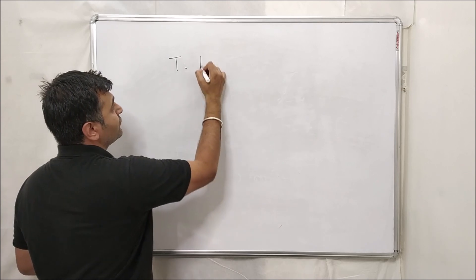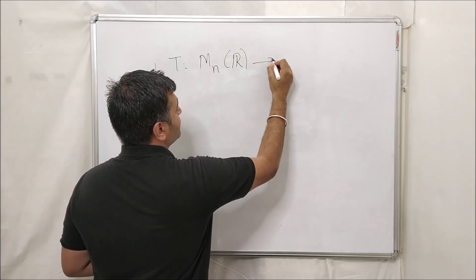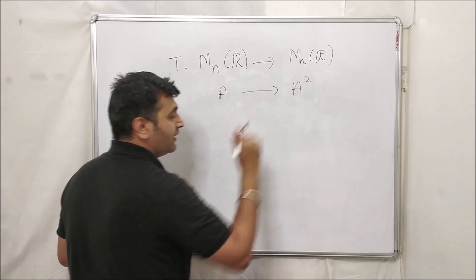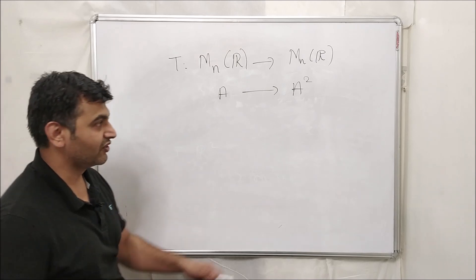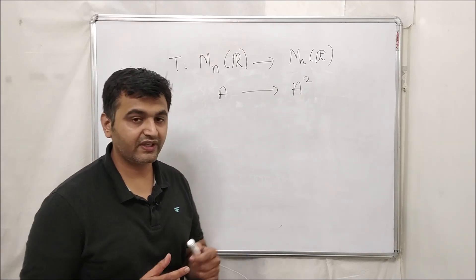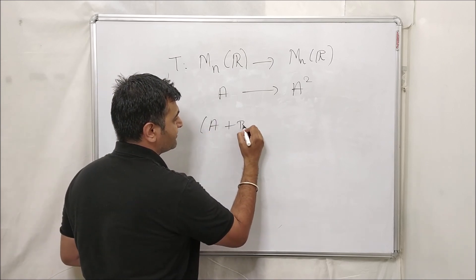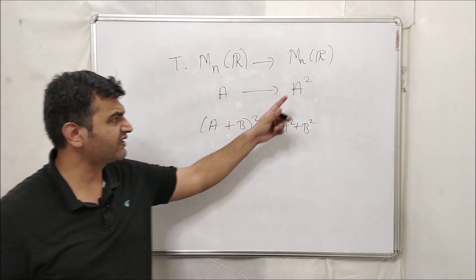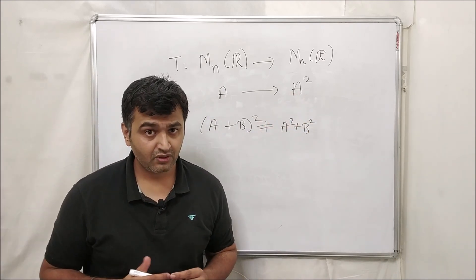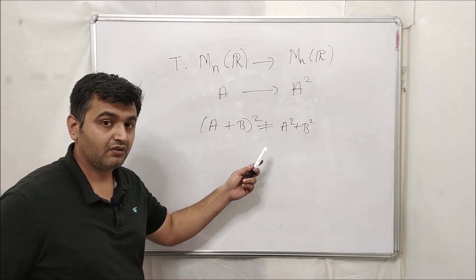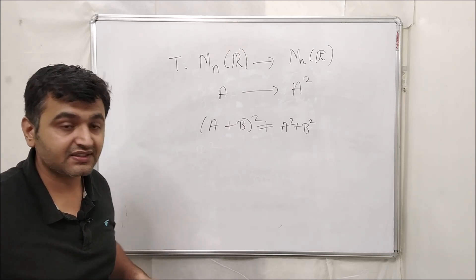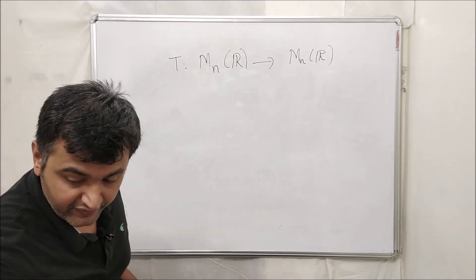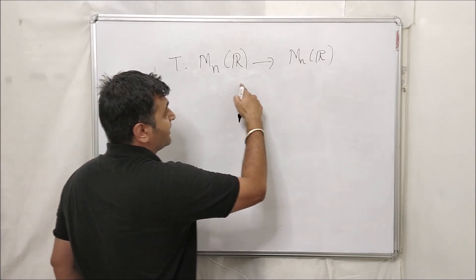In the world of matrices, consider T: M_n(ℝ)→M_n(ℝ) defined by T(A) = A². Is this a linear map? No — because (A+B)² ≠ A²+B² for matrices. The degree is bigger than one, so immediately no.